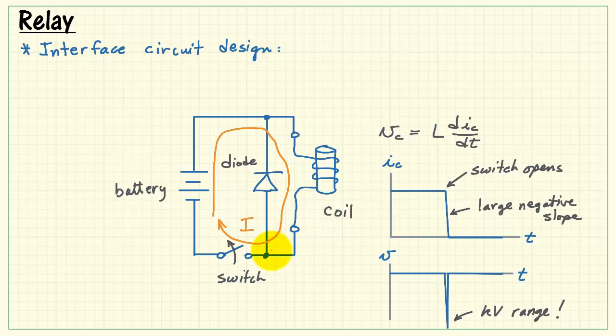Now, open the switch and see what happens. At this point, the coil is trying to force current. Can't force it through the switch, though.